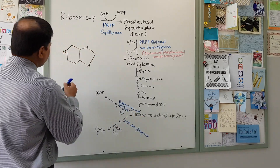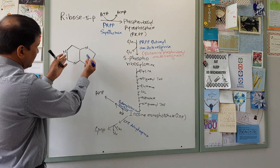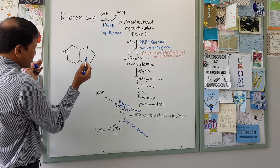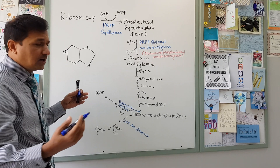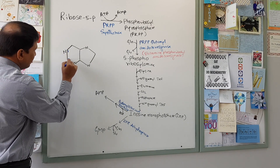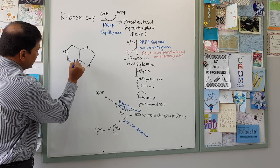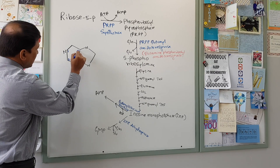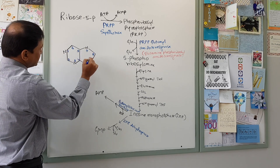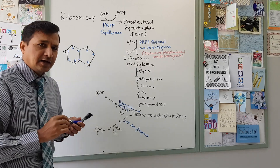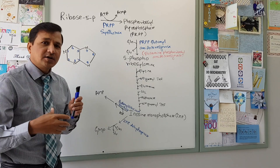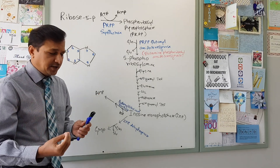I have written a purine ring here. This purine ring has got two rings together. The numbering of the purine ring — the atoms present in the purine ring — can be numbered starting from nitrogen 1. So we have nitrogen 1, carbon 2, nitrogen 3, carbon 4, carbon 5, carbon 6, nitrogen 7, carbon 8, and nitrogen 9. There are nine atoms in a purine ring and each of these atoms is donated by different metabolic intermediates.